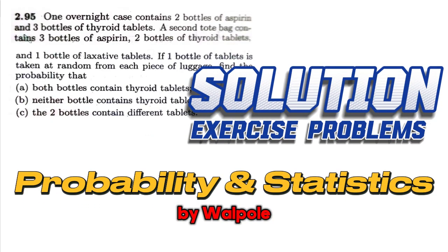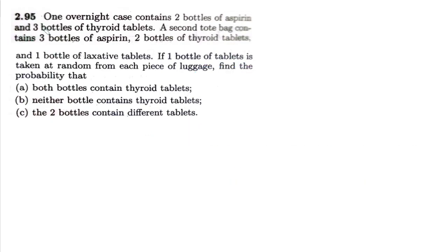Welcome back. This is question 2.95 of the 8th edition. Previously we solved question 2.94, and in this question we are going to solve a similar one. The statement is: one night case contains two bottles of aspirin and three bottles of thyroid tablets. The second tote bag contains three bottles of aspirin, two bottles of thyroid tablets, and one bottle of laxative tablets.